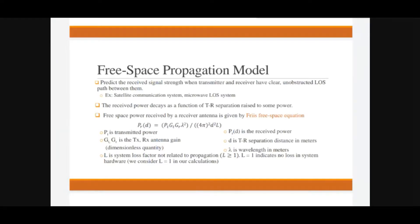In this model, we have a free space equation known as the Friis free space equation. The power received at the receiving antenna is given by Pr, and it is equal to Pt·Gt·Gr·λ² divided by (4π)²·d²·L. This is the Friis free space equation used for calculating received power at the receiving station.